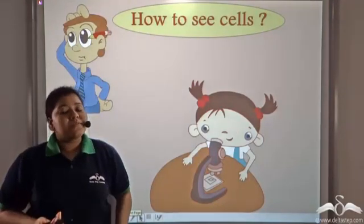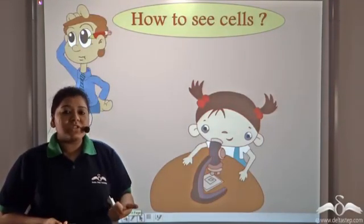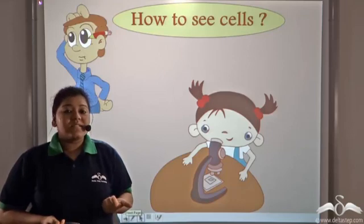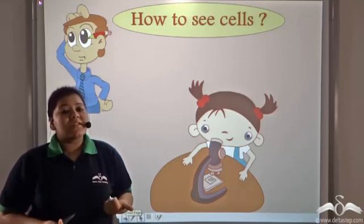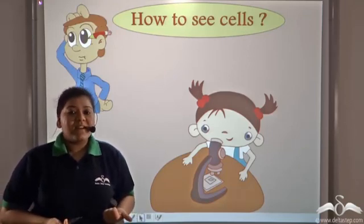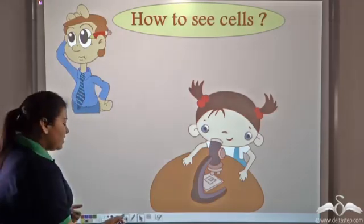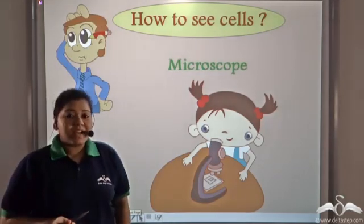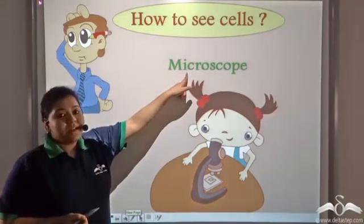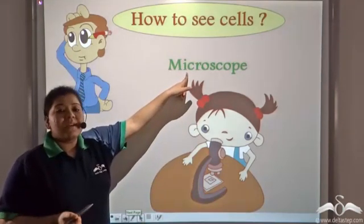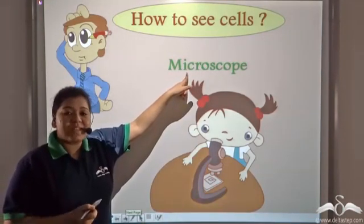Then, how do we observe cells? If we cannot use magnifying glasses, then what do we use to observe cells? Well, scientists invented a special instrument which is known as the microscope, and through the microscope, cells can be visualized.